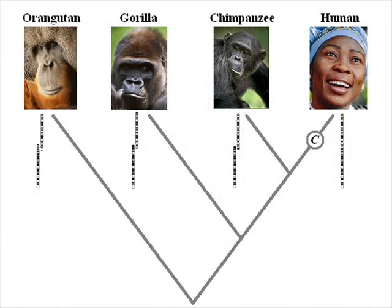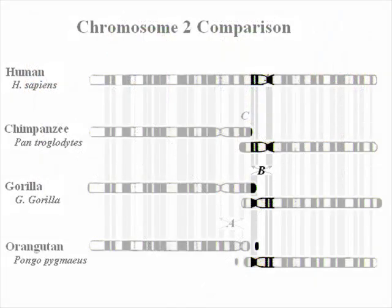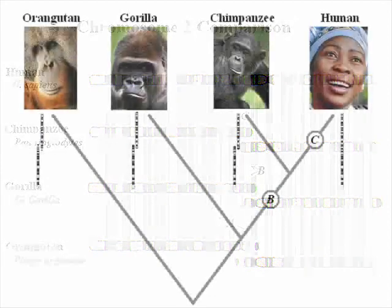Inversion event B can be placed with certainty after the divergence of the line leading to modern gorillas, but before humans and chimpanzees diverged. We can tell this because both chimps and humans share this mutation, but none of the other great apes do.